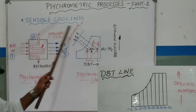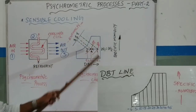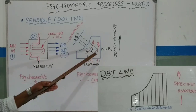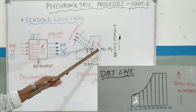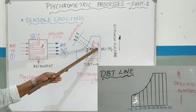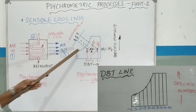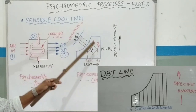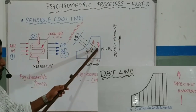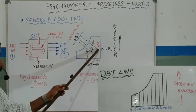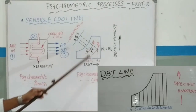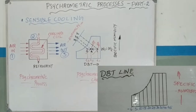Now we can talk about the sensible cooling line on the psychrometric chart. The sensible cooling line shows how the process moves between points.